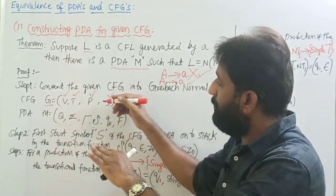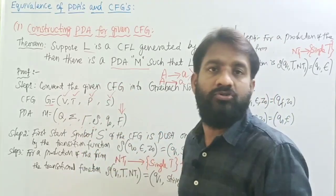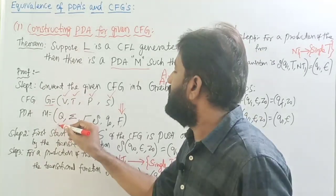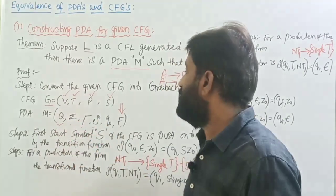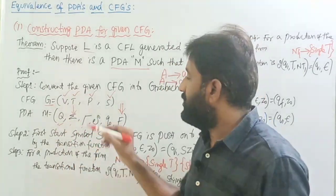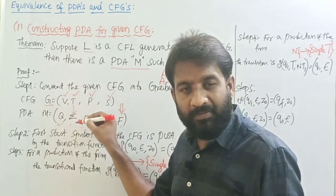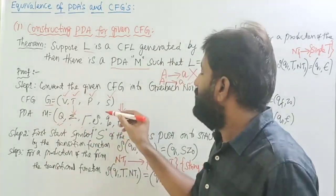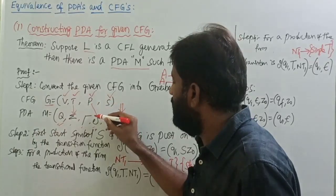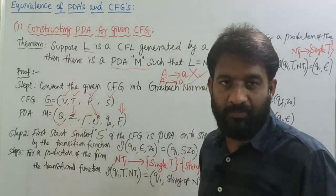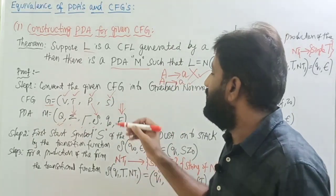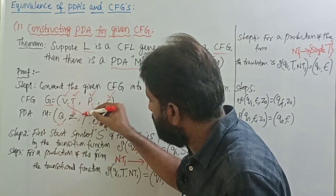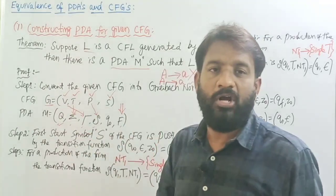We have to map the context-free grammar into the pushdown automaton. You need to identify the set of states in the pushdown automaton. All terminals are going to be treated as the input symbols in the pushdown automaton. You have to convert your productions into transitions in the pushdown automaton, and all variables in the grammar can be pushed onto the stack, including Z-naught.